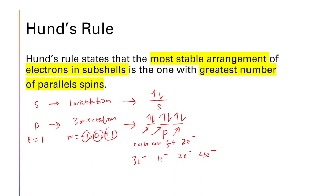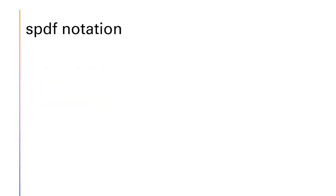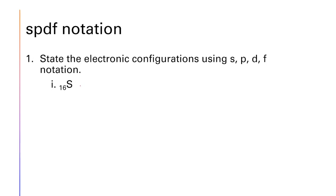Now let's combine all this information to write spdf notation. There are two ways to write electronic configuration: spdf notation and orbital diagram. To write spdf notation for sulfur (atomic number 16), first recall the Aufbau order: 1s, 2s, 2p, 3s, 3p, 3d... Since sulfur is neutral, 16 protons means 16 electrons. We start: 1s².